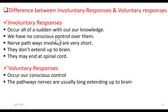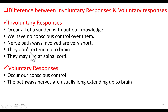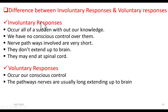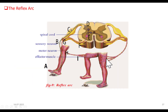Because these pathways are not going to the brain, we are not aware of them, and they end in the spinal cord. Voluntary responses are the reverse: they occur under our conscious control, and the pathways extend up to the brain, so the pathways are very long. These are the differences between voluntary and involuntary responses.